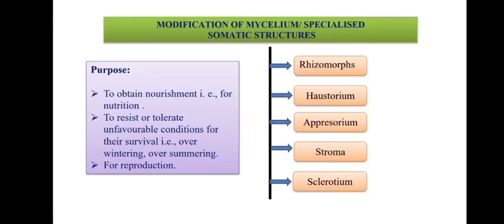Now we discuss modifications of mycelium or specialized somatic structures. The main purpose behind these structures is to obtain nutrition, to tolerate unfavorable environmental conditions, or for reproduction. The most important specialized somatic structures formed by plant pathogenic fungi are rhizomorph, haustorium, appressorium, stroma, and sclerotium.